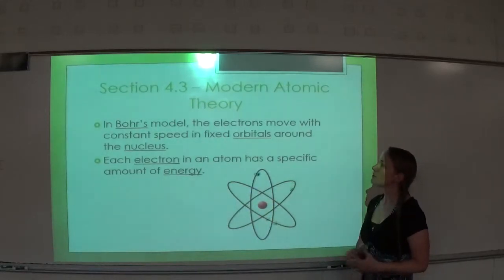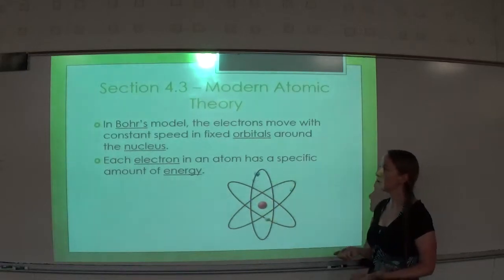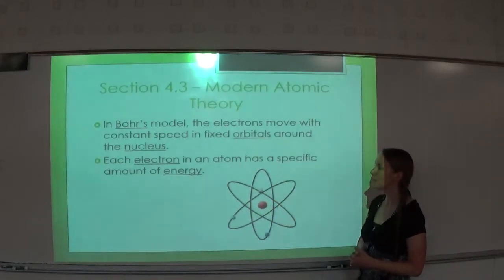In Bohr's model, the electrons move with a constant speed in fixed orbitals around the nucleus. Each electron in an atom has a specific amount of energy.